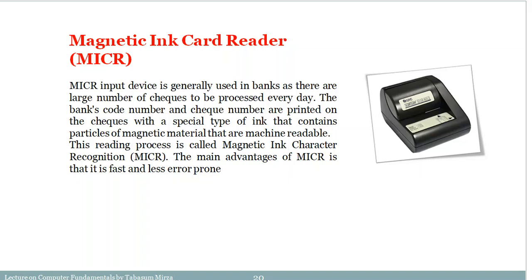Now coming to another input device — the Magnetic Ink Card Reader, or MICR. This input device is generally used by banks to process checks. MICR checks have a MICR number that encodes the bank code and check number. There is a special kind of ink made from magnetic material that is machine-readable. The main advantage of MICR is that it is fast and less error-prone than manual entry, and it is commonly used for bulk check processing.